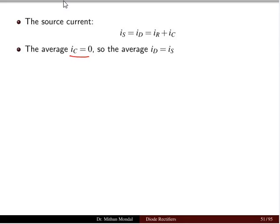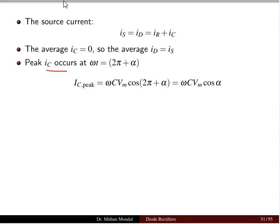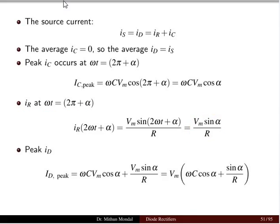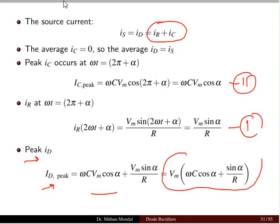The average capacitor current is zero because in one half cycle it charges and in the other it discharges. The average diode current equals the average source current. The peak capacitor current occurs at ωt = 2π + α and equals ωCVm cos α. The resistor current at ωt = 2π + α equals Vm sin α / R, so the peak diode current is the sum of these two currents.